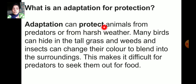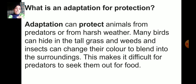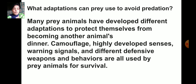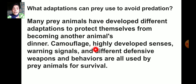What is an adaptation for protection? Adaptation can protect animals from predators or from harsh weather. Many birds can hide in tall grass and weeds, and insects can change their color to blend with the surroundings, making it difficult for enemies to spot them. Many prey animals have developed different adaptations like camouflage, highly developed sensors, warning signals, and defensive weapons and behaviors, all used for their survival.